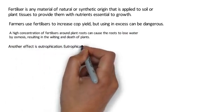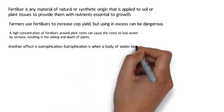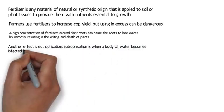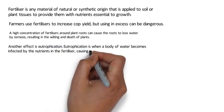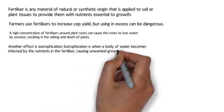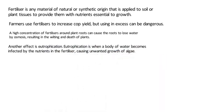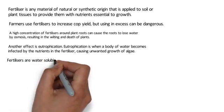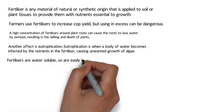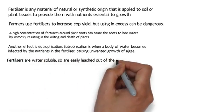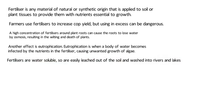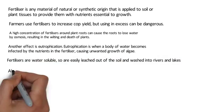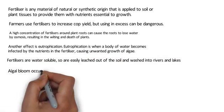Another effect is eutrophication. Eutrophication is when a body of water becomes enriched by the nutrients in the fertiliser, causing unwanted growth of algae. Fertilisers are water-soluble, so they are easily leached out of the soil and washed into rivers and lakes.